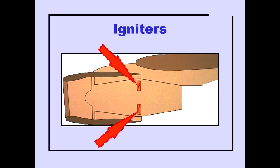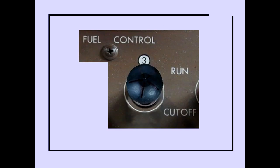Each engine is equipped with two low-energy igniters. The igniters are energized when the fuel control switch is positioned to run. The AC power system provides power for ignition.